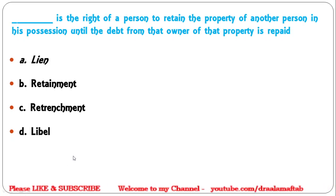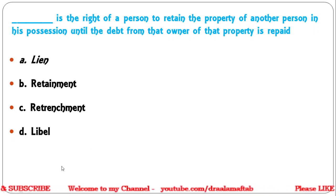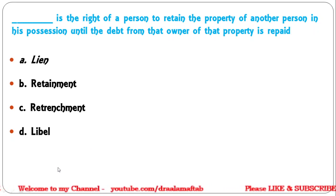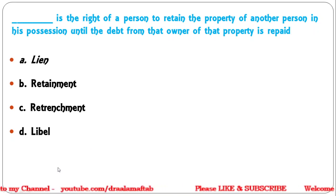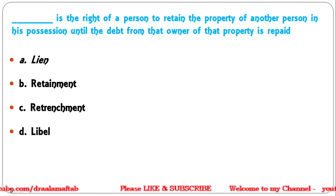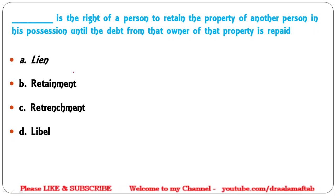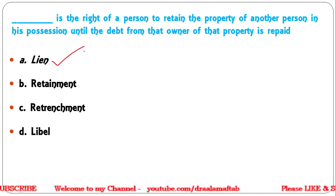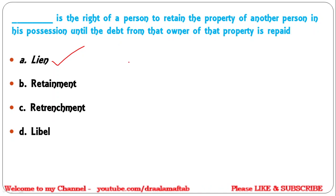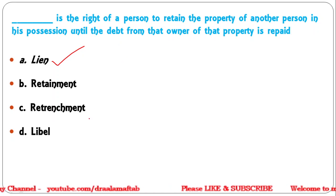Next question: Dash is the right of a person to retain the property of another person in his possession until the debt from that owner of the property is repaid. Options: Lien, Retainment, Retrenchment, or Label. The correct answer is Lien — lien is the right of a person to retain the property of another person.